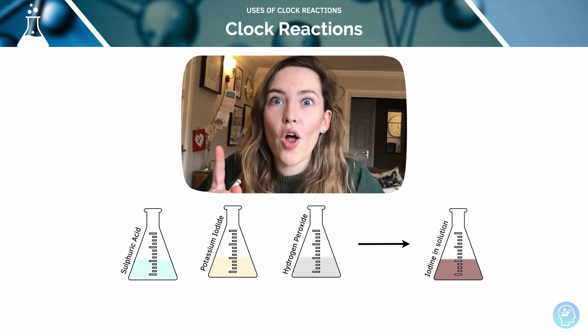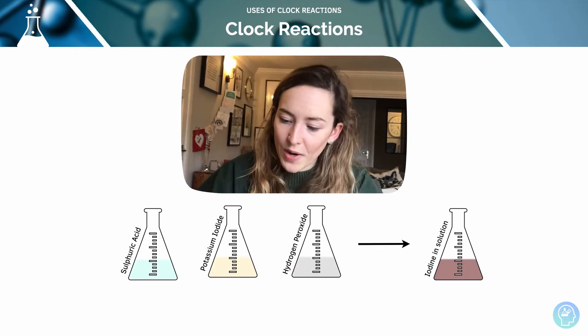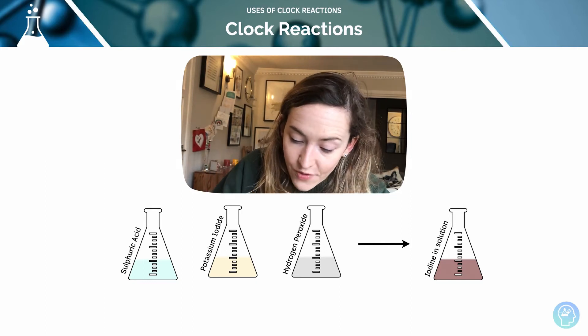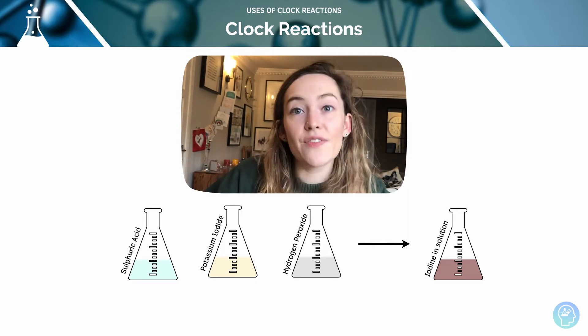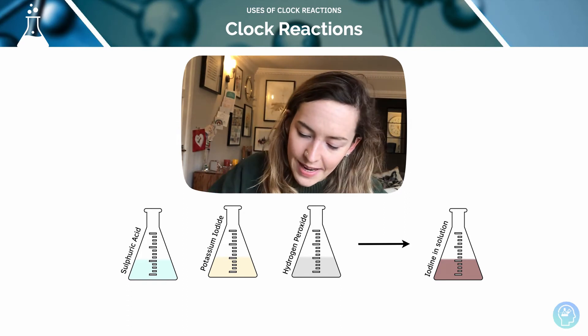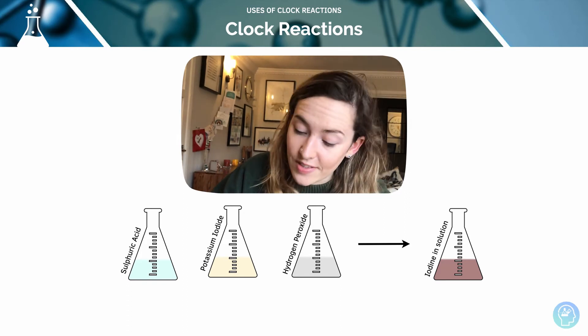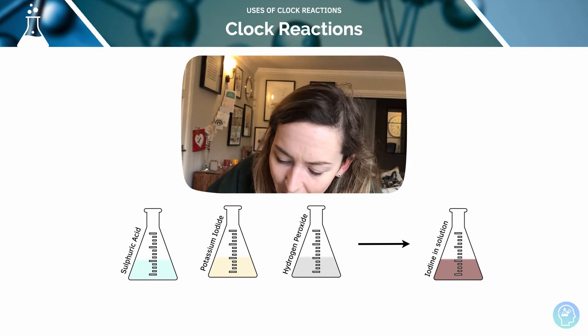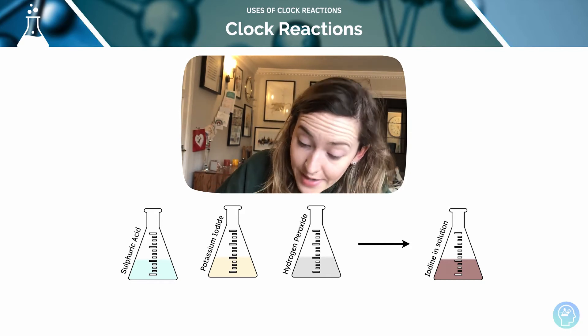So we have step one of the iodine clock experiment. What do we need to mix together to create our experiment? We are going to have sulfuric acid that gives us some protons, then we're going to have some potassium iodide that's going to give us some iodide ions, and then we are going to be able to form iodine from that.